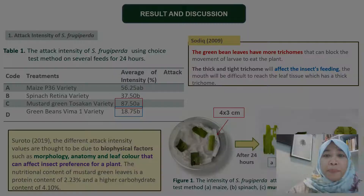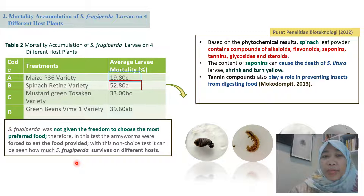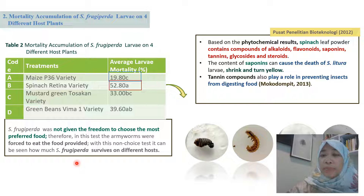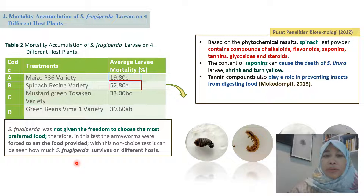According to Surato 2019, the different attack intensity values are thought to be due to biophysical factors such as plant morphology, anatomy, and leaf color, which can affect insect preference for a plant. The second data obtained was the mortality accumulation of S. frugiperda on four different host plants. The highest mortality was obtained in the spinach treatment at 52.8%, and the lowest mortality accumulation was in the maize P36 variety at 19.8%. Since maize is the main host plant of S. frugiperda, the mortality accumulation was also the lowest.